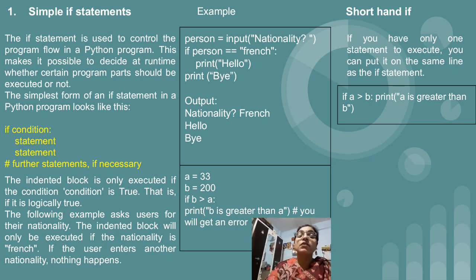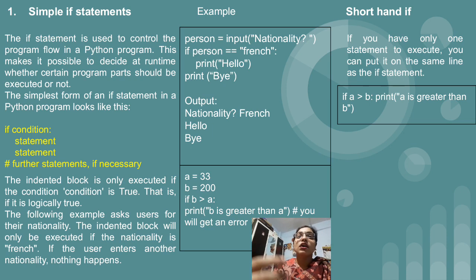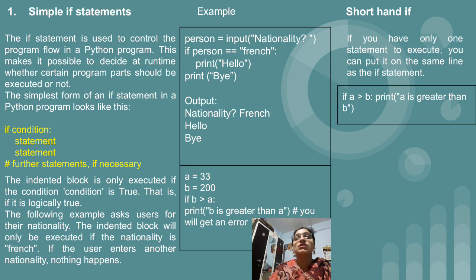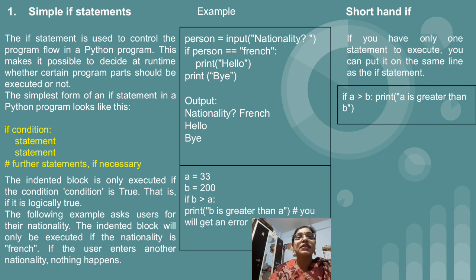Here, the important thing is indentation. As I told you, we don't have curly brackets in Python. Which statements are inside the if condition and which statements are outside the if condition — that will be recognized with the help of indentation. This is a unique point in Python: without indentation, your program is not going to get executed. Indentation is very important.